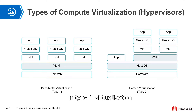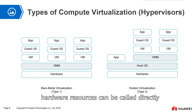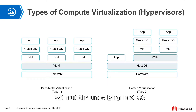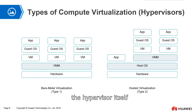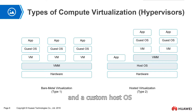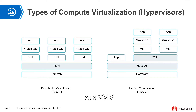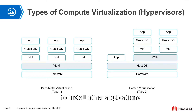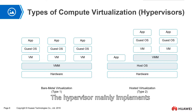In type 1 virtualization, hardware resources can be accessed directly without an underlying host OS. The hypervisor itself acts as both the host OS and the virtual machine manager. In addition to functioning as a VMM, it is generally not possible to install other applications on this host OS. The hypervisor mainly implements two basic functions.